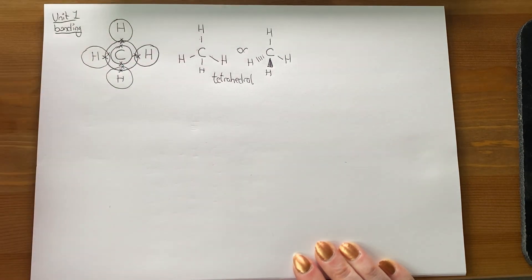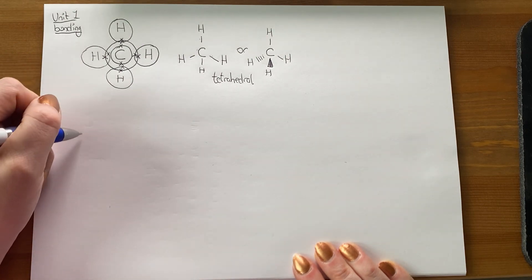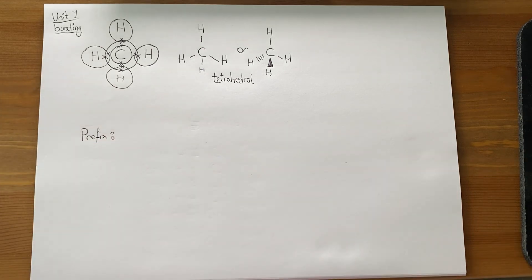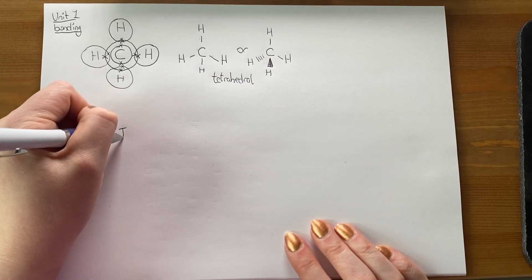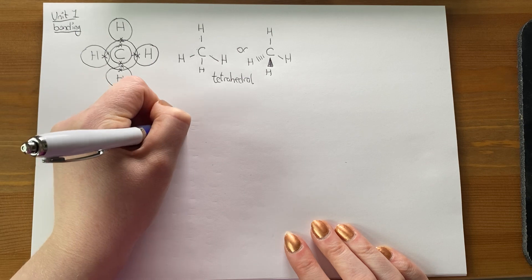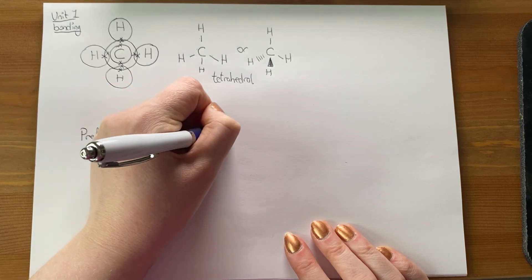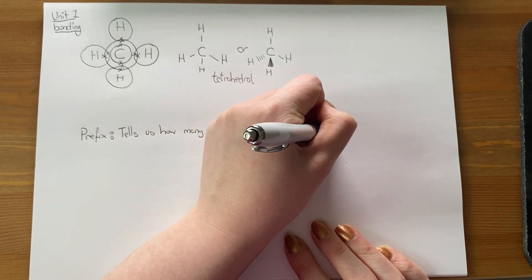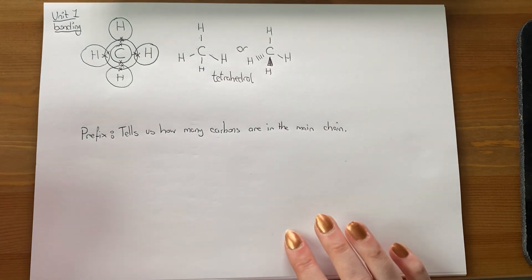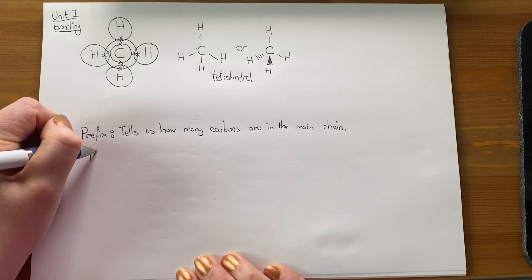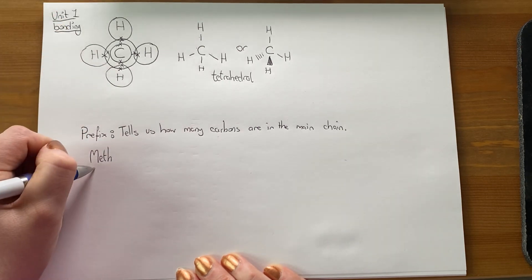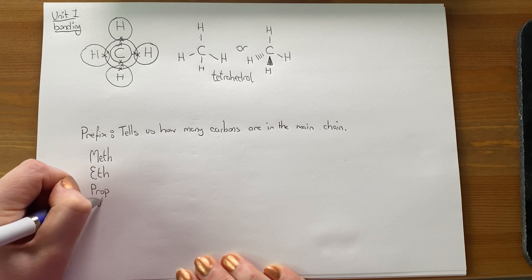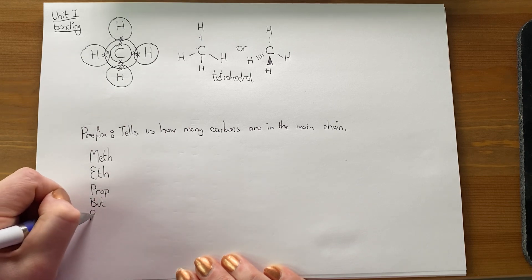What I thought would be really important for you to know first is what happens when we have different carbons bonded together. If I only have one carbon in my molecule, we have things called prefixes. The prefix tells you how many carbons are in the chain of the molecule you're looking at. There are eight prefixes you need to know in National Five. The first one is 'meth,' the second is 'eth,' then we have 'prop,' then 'but,' and then 'pent.'